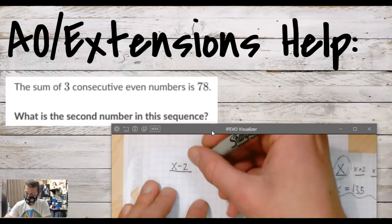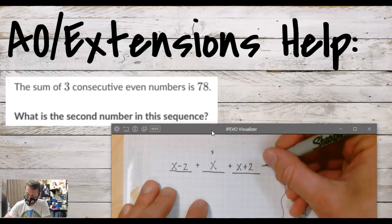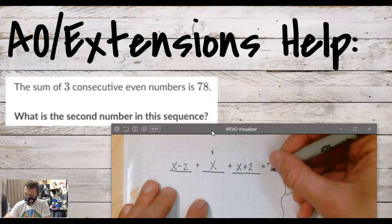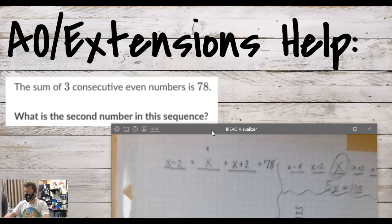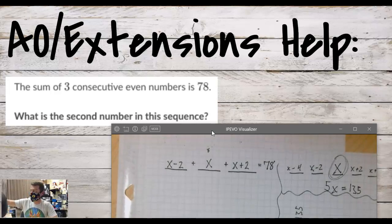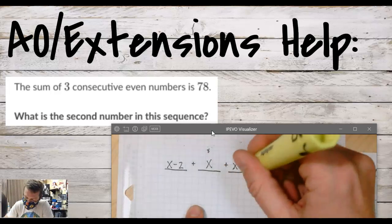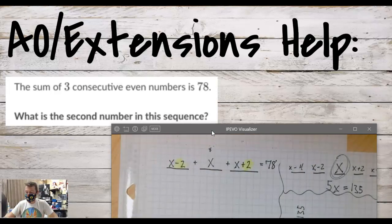So what I have is that these three values sum to 78. Well, the really cool thing here, or convenient I guess, is that this plus 2 and this minus 2 are gonna cancel each other out.